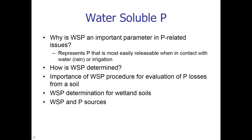Why is water-soluble P an important parameter in P-related issues? Water-soluble P represents the P that is most easily releasable when in contact with water, whether it be rain or irrigation. We'll also address how water-soluble P is determined, its importance for evaluating P losses from a soil — for both upland and wetland soils — and what it tells us with varying P sources.